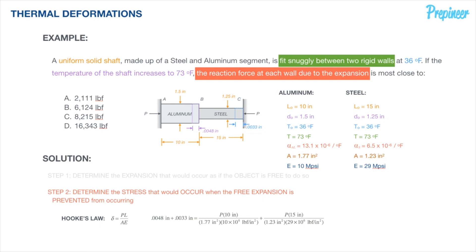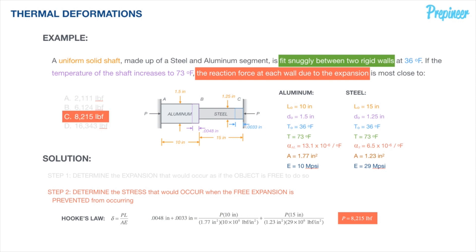Solving for P, the reaction force at the wall due to the temperature change from 36°F to 73°F is 8,215 pounds-force. That is the reaction force that keeps the uniform solid shaft in place throughout this temperature change. The correct answer is option C: 8,215 pounds-force.